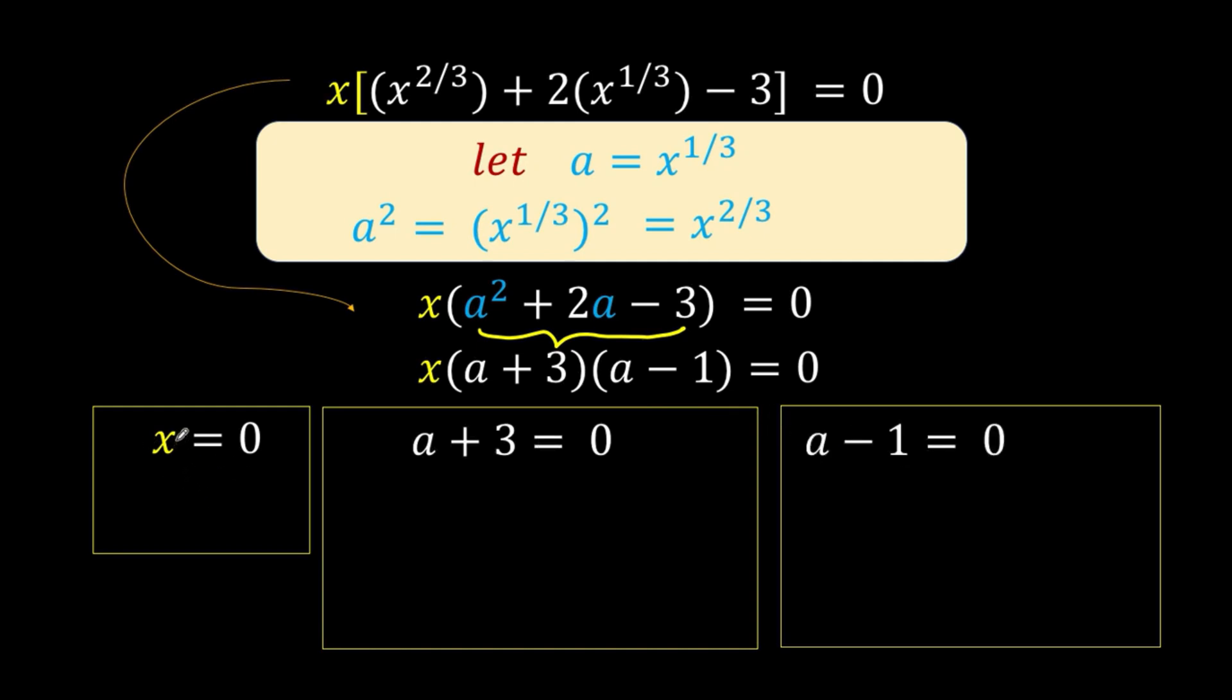At the leftmost part, we already have our solution: x equals 0. But the second and third are still in terms of our dummy variable a. So we need to go back to our substitution and replace a with x raised to 1 third. But first, let's solve for a. Subtracting 3 from both sides, we get a equals negative 3. Then replace a with x raised to 1 third, and raise both sides to the third exponent. The left side equals x, and negative 3 cubed equals negative 27. So our second value for x is negative 27. The first was x equals 0.